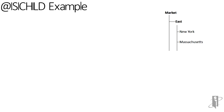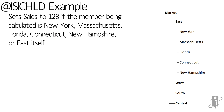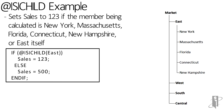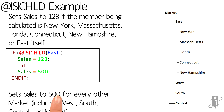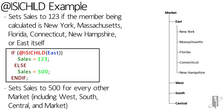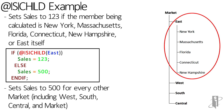Now if we wanted to include the east member itself as well, we could just say isichild, and that will pick up the parent or the parent's children — so east plus all the states within east.